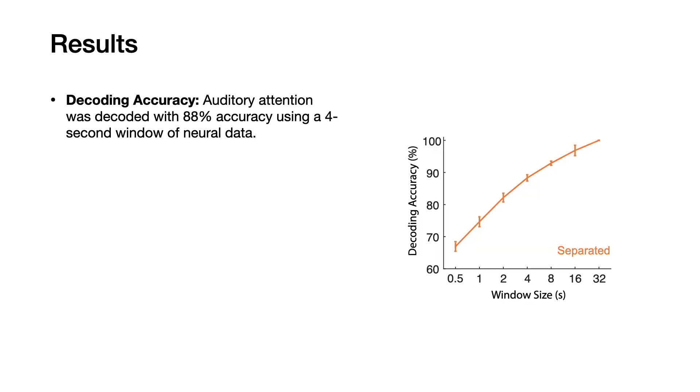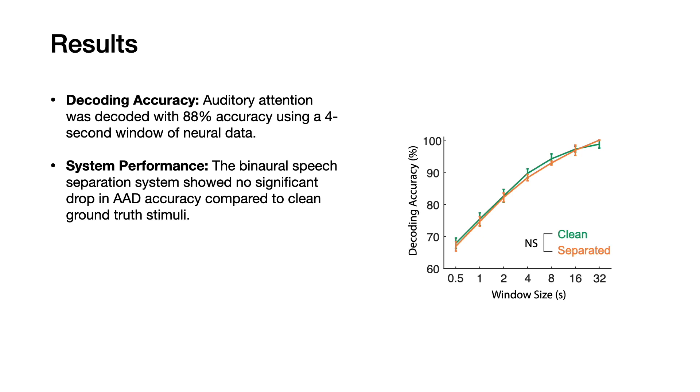Auditory attention was successfully decoded from brain signals with an average accuracy of 88%. The binaural speech separation system performed effectively, showing no significant difference in AAD accuracy when compared to the clean ground truth stimuli.